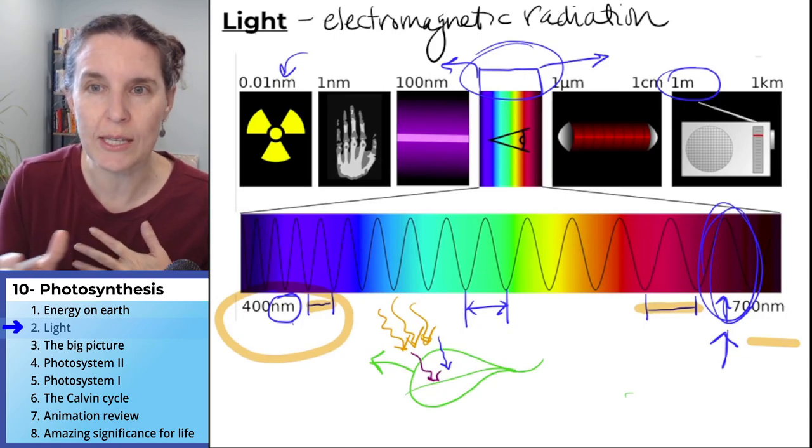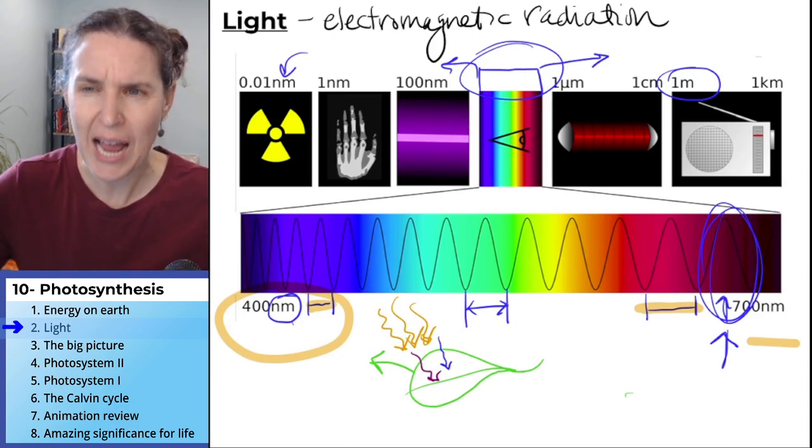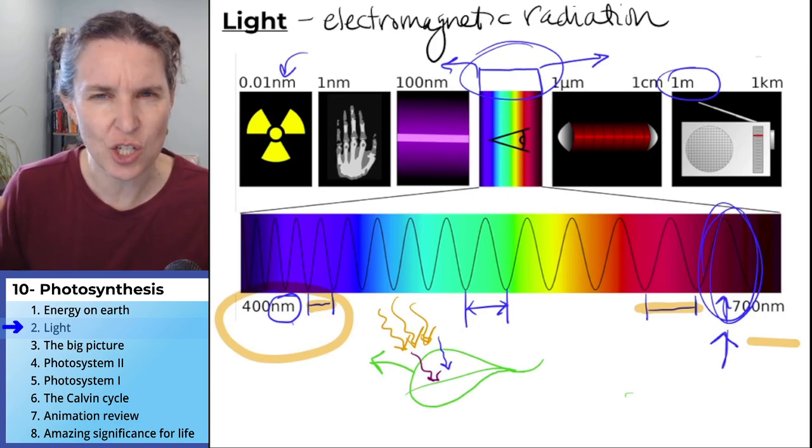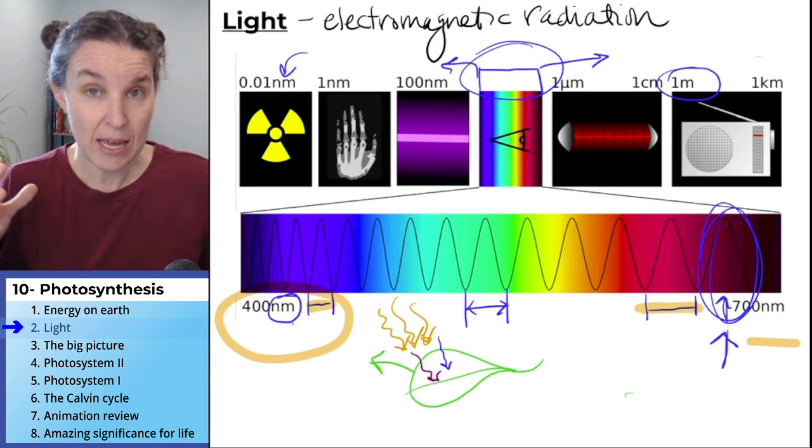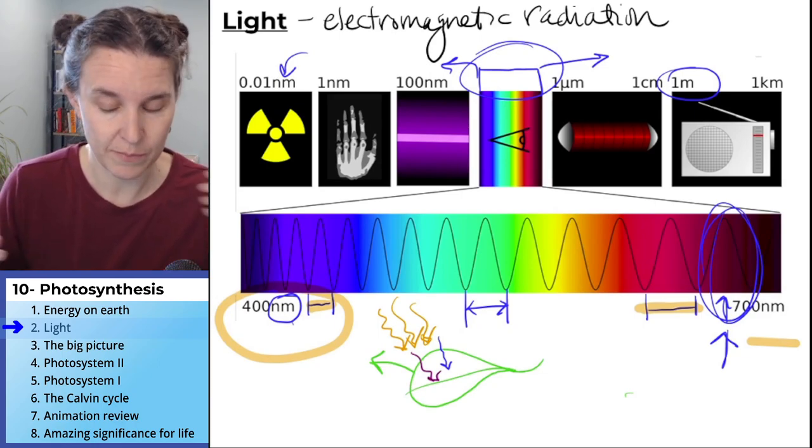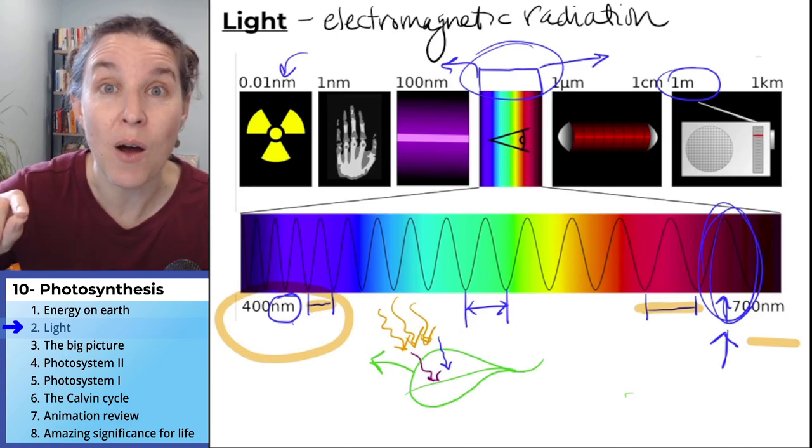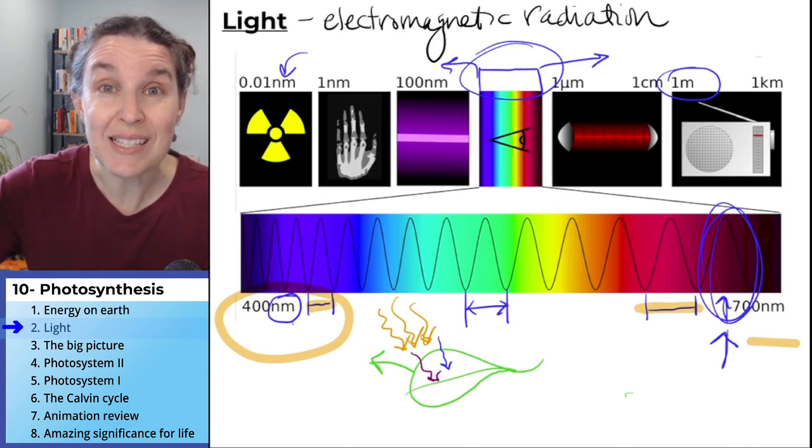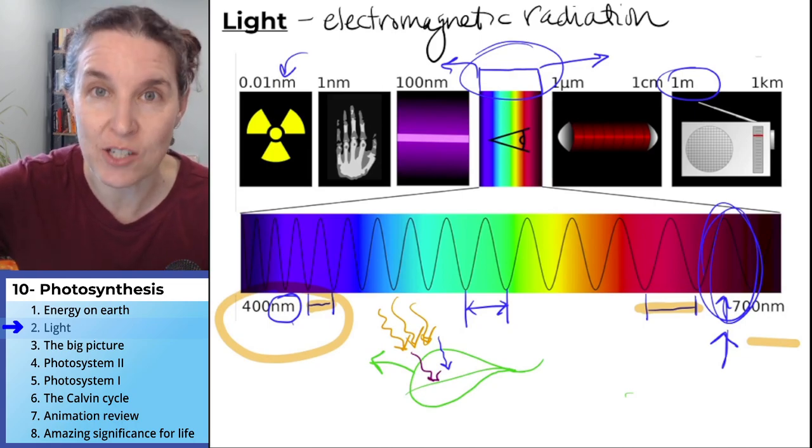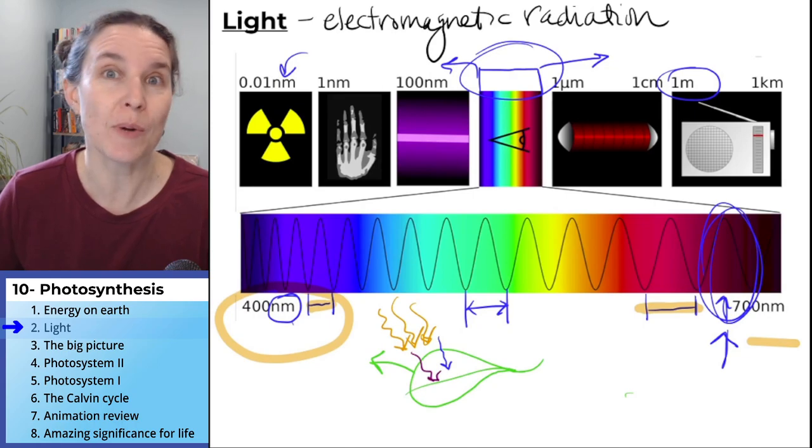If you look at this image of all the possible types of electromagnetic radiation, do you get a sense that there's energy possible there? In the next section, we're going to talk about how photosynthesis captures that energy and stores it in sugar molecules.